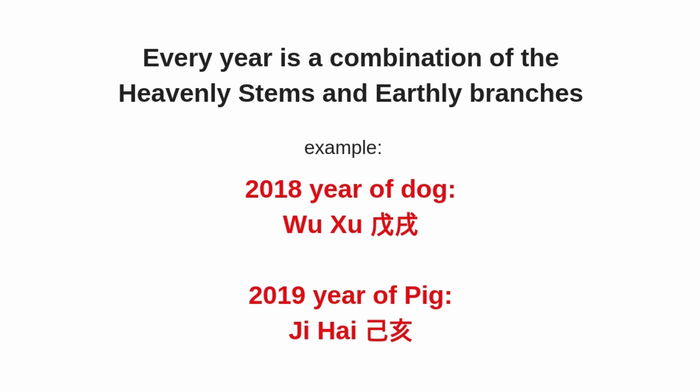For example, in the year 2018, the year of the dog is the Wu-Shu year. And 2019, the year of the pig, is the Ji-Hai year. Your Wenchang location can be calculated from the heavenly stem of your birth year.